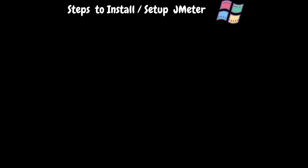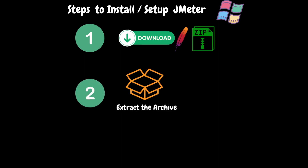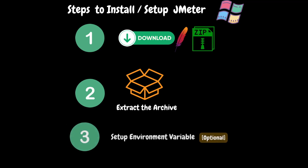Now let's quickly go through the installation steps on the Windows platform. First, we need to download the latest JMeter archive from the Apache JMeter official website. Then, we need to extract the downloaded zip package and copy it to the required folder. Finally, we need to set up the environment variable — this is an optional step and we can still run JMeter without it. By following these steps, let's quickly install JMeter on Windows.